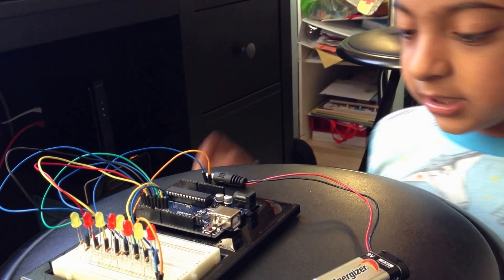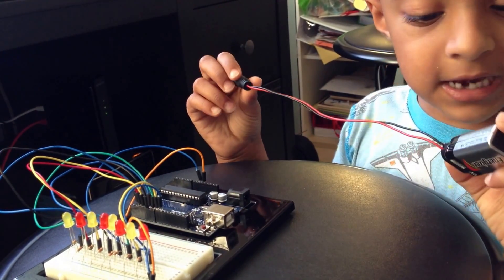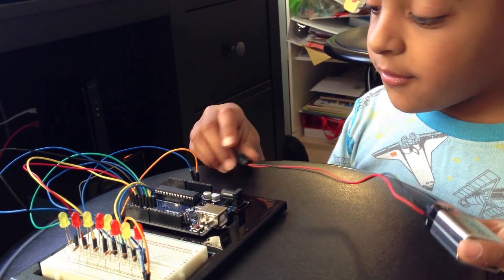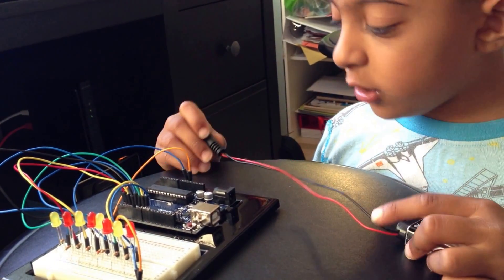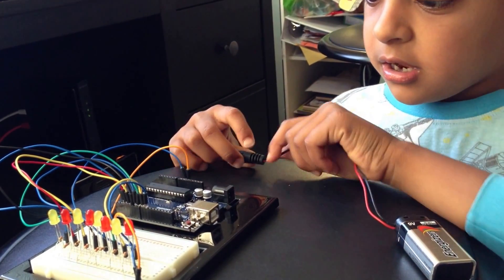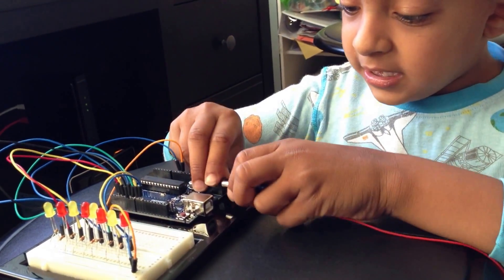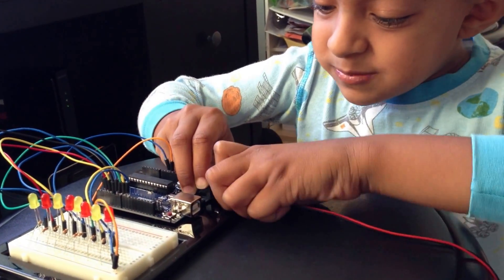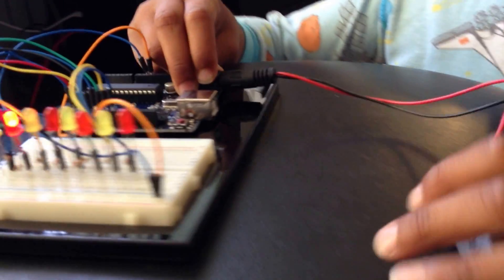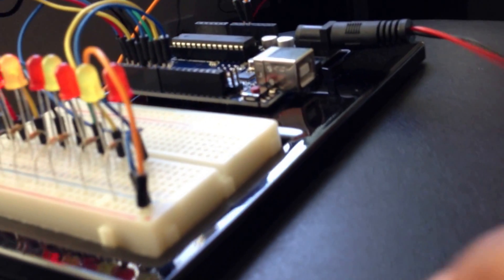And this is the power source right now, which I have. It's a 9-volt battery. I'm going to plug it into this black plug, and the lights are going to start up in its pattern.